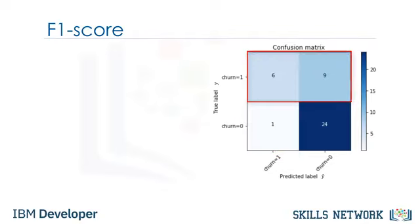Let's look at the first row. The first row is for customers whose actual churn value in the test set is 1. As you can calculate, out of 40 customers, the churn value of 15 of them is 1, and out of these 15, the classifier correctly predicted 6 of them as 1 and 9 of them as 0. This means that for 6 customers, the actual churn value was 1 in the test set, and the classifier also correctly predicted those as 1.